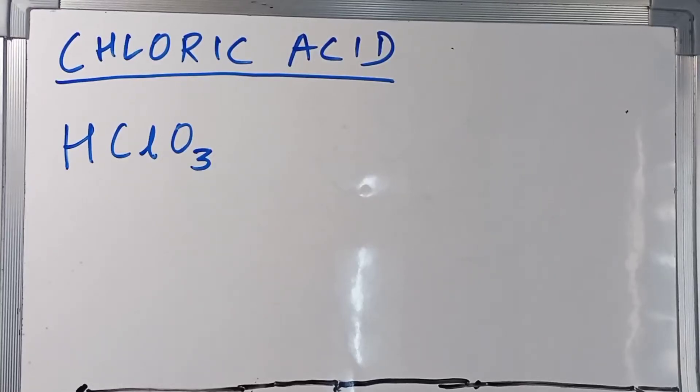Okay, so we want to draw the Lewis dot structure of chloric acid which is HClO3.